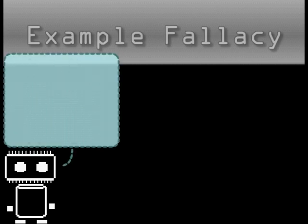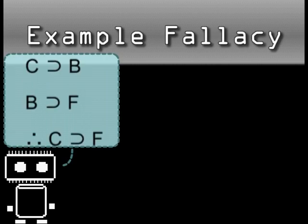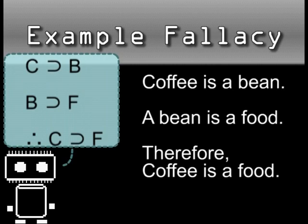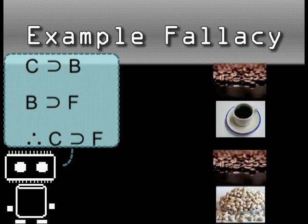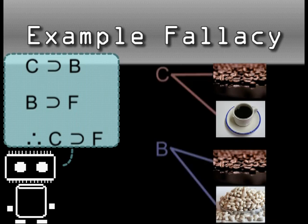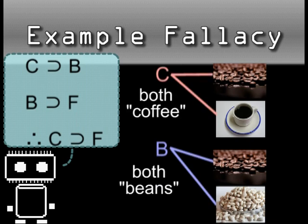Let me show you how it works. I made an argument in the previous video demonstrating that coffee isn't a beverage, but a food. In this argument, I relied on two distinct meanings of the word 'coffee' and two different meanings of the word 'beans' in my premises. I was intentionally vague and used compact language to hide these choices.